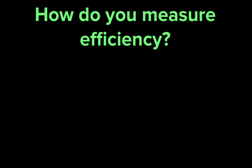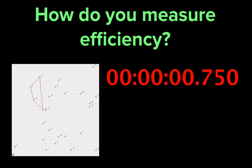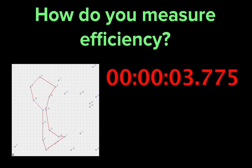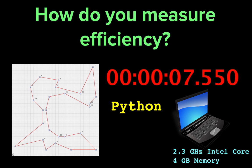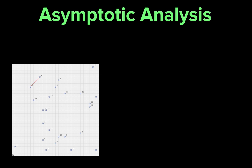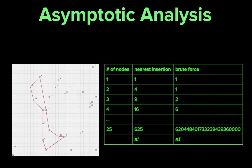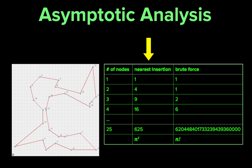How do you measure the efficiency of an algorithm? We could time how long it takes to physically run the code, but that would tell us only about that particular implementation in a certain programming language on a particular computer and just for the input it was given. Instead, computer scientists use a technique called asymptotic analysis, which allows algorithms to be compared independently of the particular programming language or hardware, so that we can conclusively say that yes, some algorithms are more efficient than others.